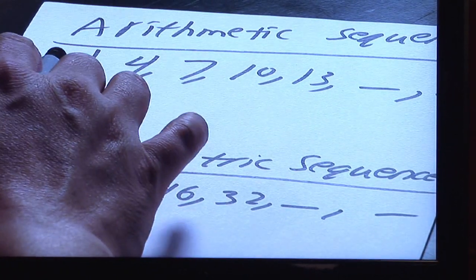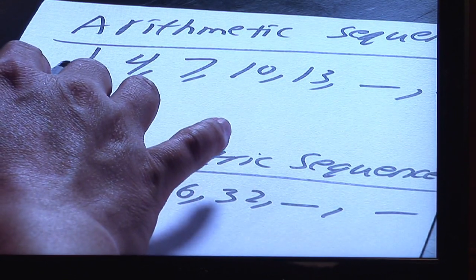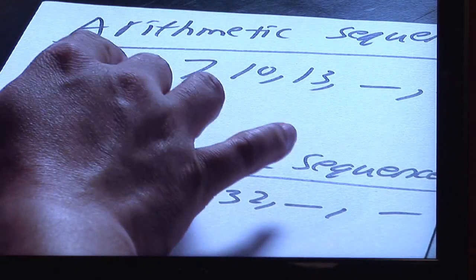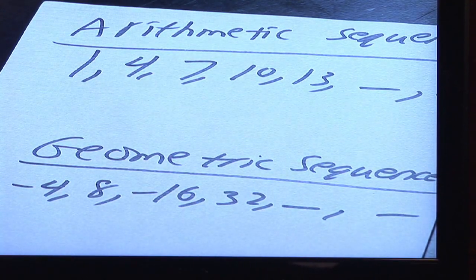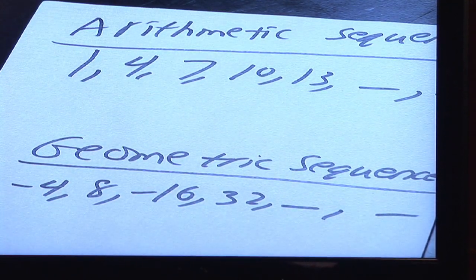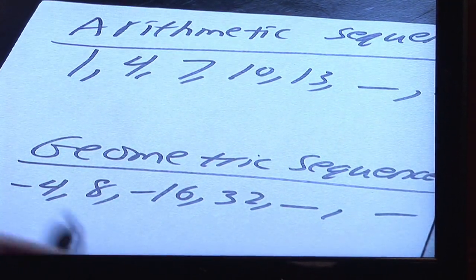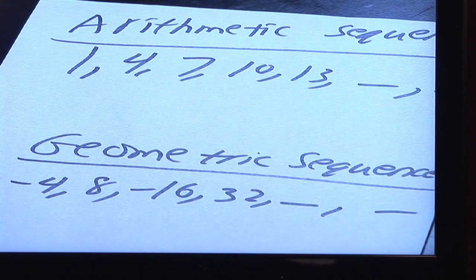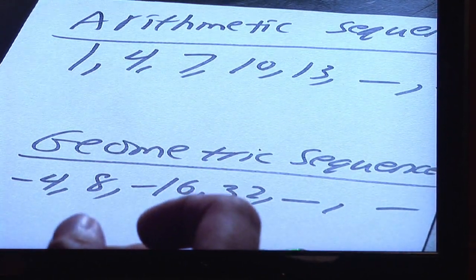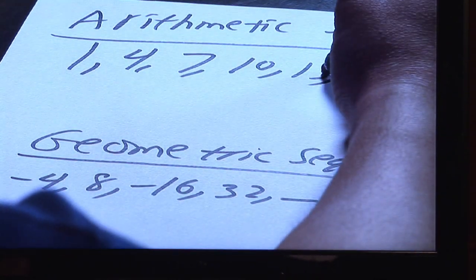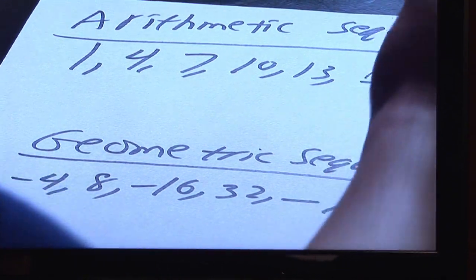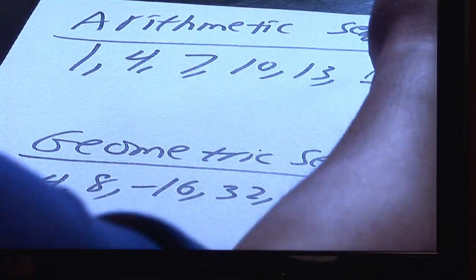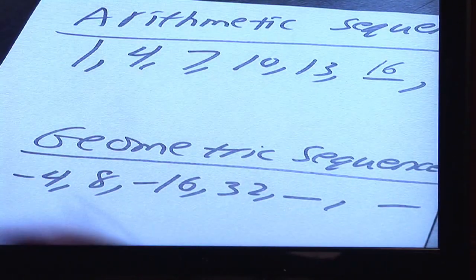Obviously 1 plus 3 is 4, 4 plus 3 is 7, 7 plus 3 is 10 — and so after a while you'll get the idea that the pattern is adding by 3. Well, that lets you figure out what the next terms are. From 13, I know to add 3, that's going to give me 16. And then from 16 I can add 3 again to give me 19, and of course the sequence will continue.